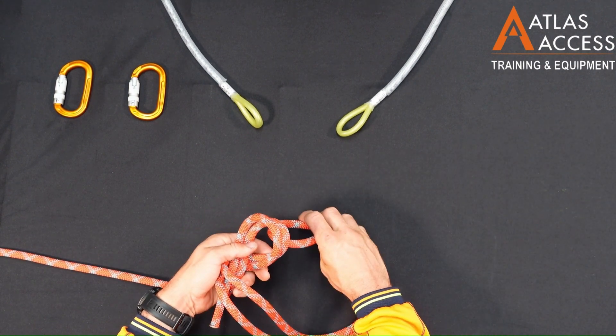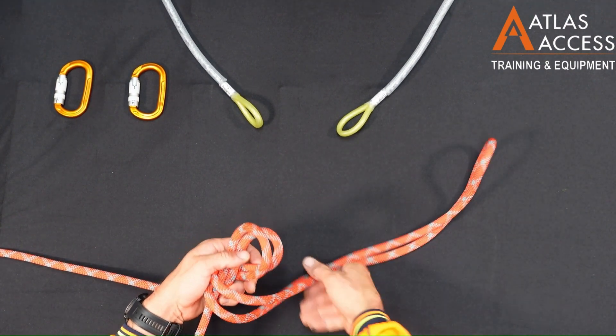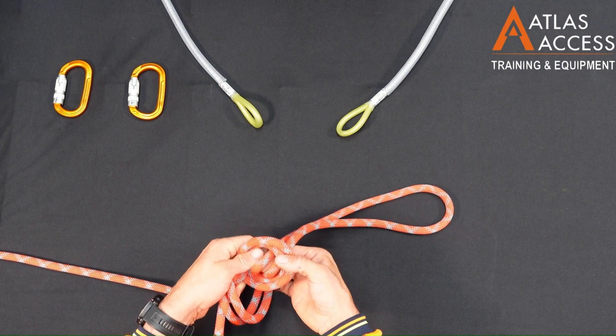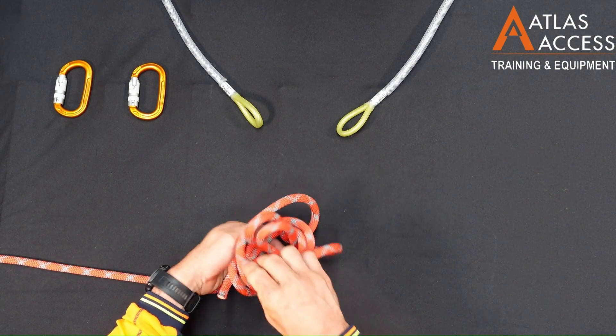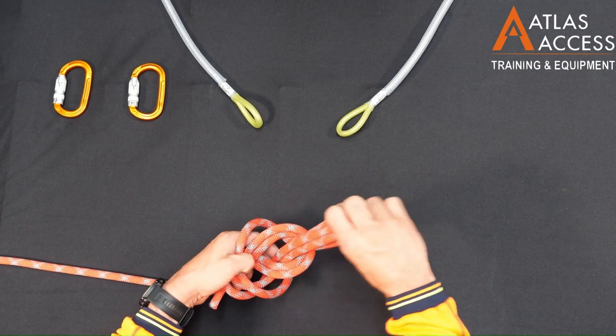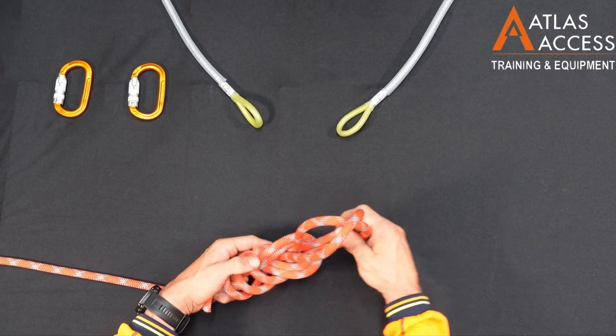Here, instead of putting the end of the loop through, we're going to grab the middle of the loop and put it through the loop created. Then, with the end of the rope, encapsulating the two small loops we just created.